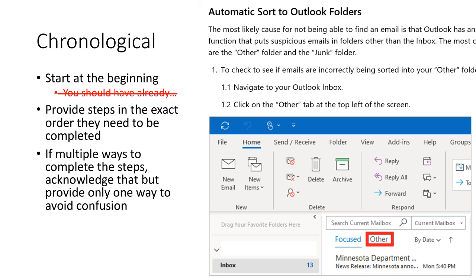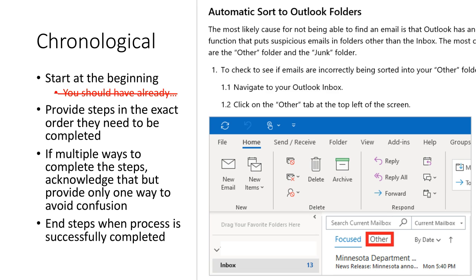If there are multiple ways to complete the steps — sometimes that happens — for the clarity of your reader, instead of showing the same steps in three different orders, I would recommend providing one set of step-by-step instructions and acknowledging at the beginning that there are multiple ways to do this, here's one of them, to avoid confusion. When you're done with the process, make sure you end the steps — any conditional information, troubleshooting, or future maintenance needs to be separate in another paragraph or a conclusion so the reader doesn't confuse it as an actual step.